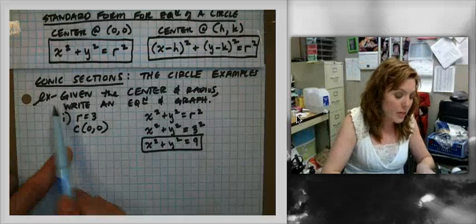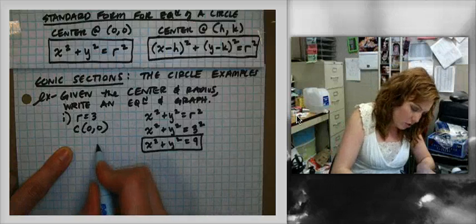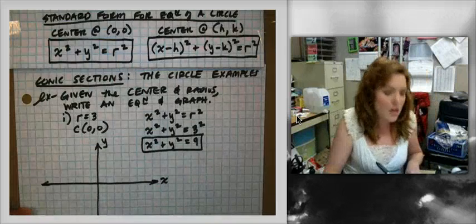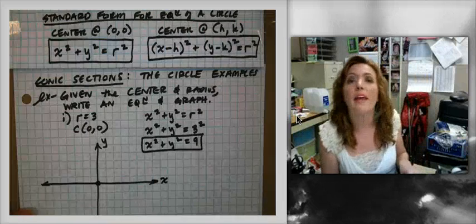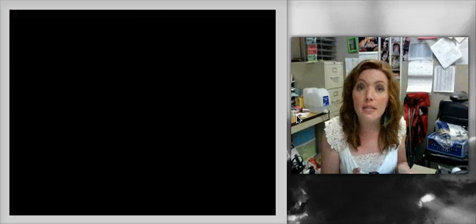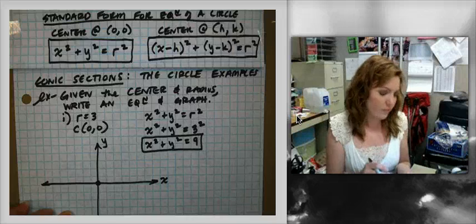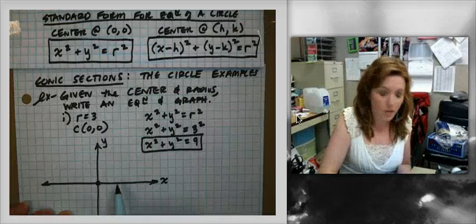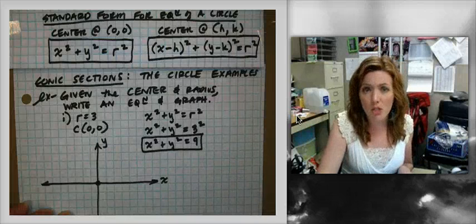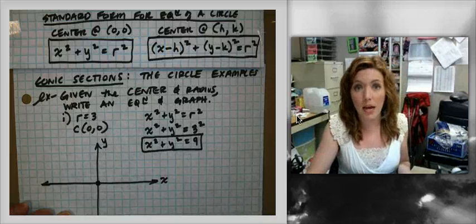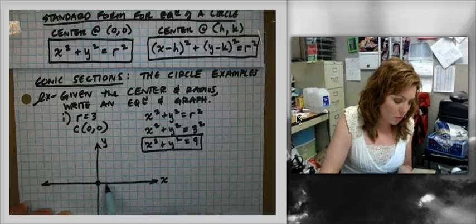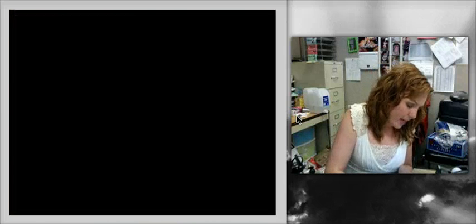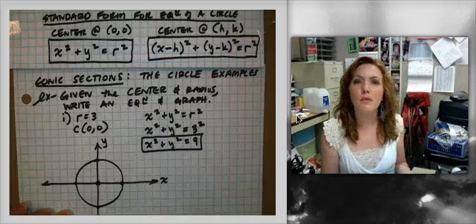Now let's go ahead and draw the graph. We need the x-axis and the y-axis. If the center is at (0,0), we start by putting a dot there — that's always where you want to start with all conic sections. The radius is 3, so we go 3 units to the right, 3 units up, 3 units to the left, and 3 units down, then draw the best circle we can through those points.